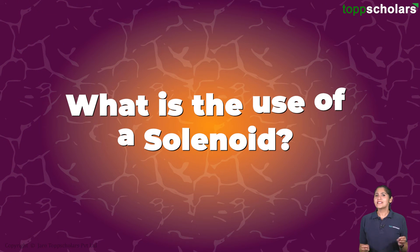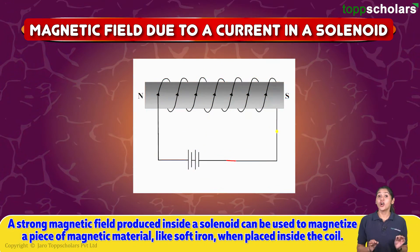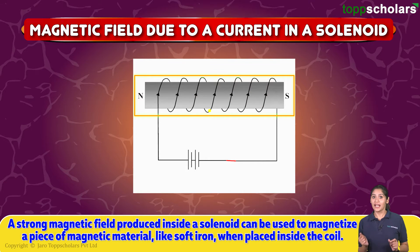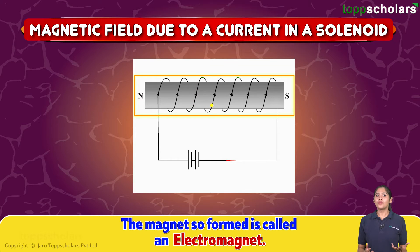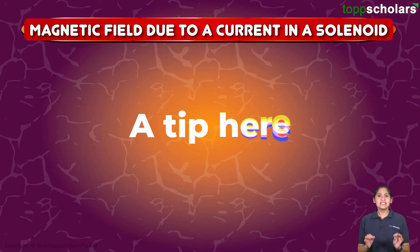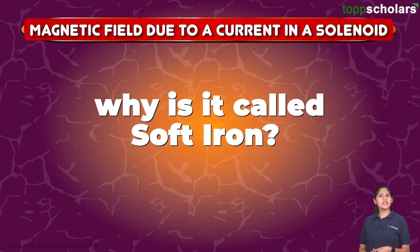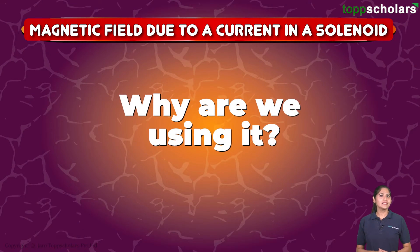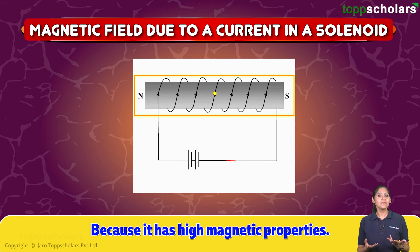What is the use of a solenoid? A strong magnetic field produced inside a solenoid can be used to magnetize a piece of magnetic material like soft iron when placed inside the coil. The magnet so formed is called an electromagnet. A tip here: why is it called soft iron? Because it has less content of carbon. Why are we using it? Because it has high magnetic properties.